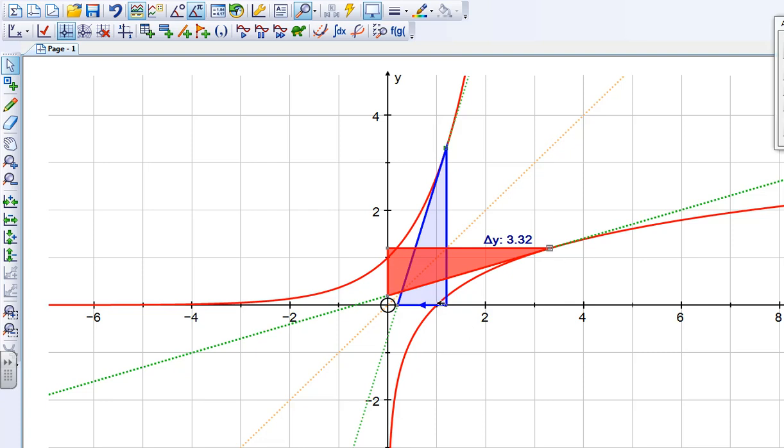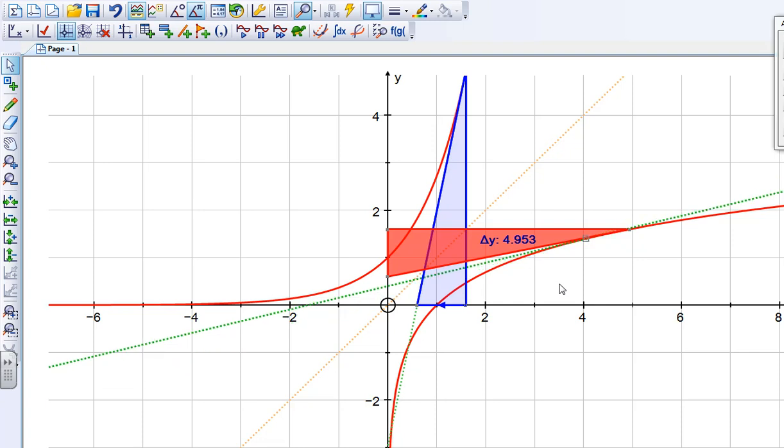And just to check that it does work, if we try another couple of places, so if I just shift that along a little bit, and then shift my tangent along a little bit, we can see that the tangent will always lie along this line segment here.